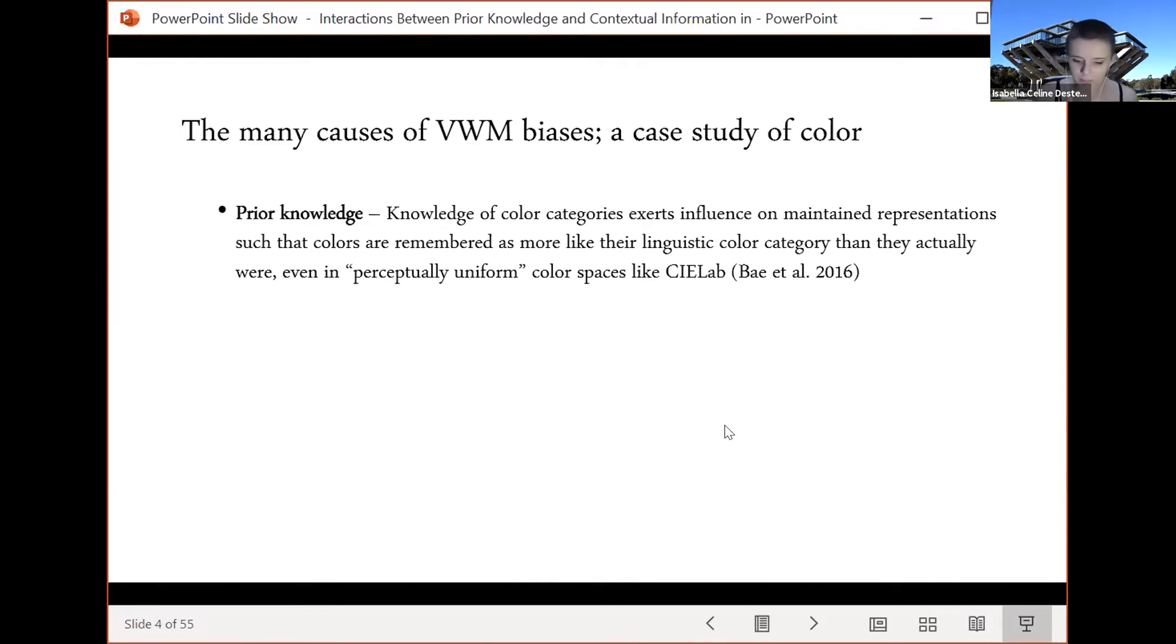The first source of bias we were looking at is prior knowledge. Knowledge of color categories inserts influence on maintained representations such that colors are remembered as more like their linguistic color category than they actually were even in perceptually uniform spaces.